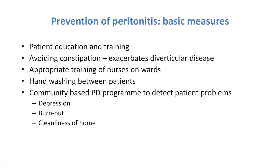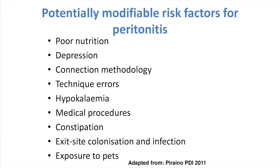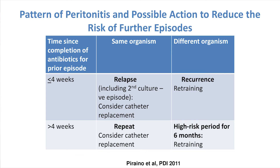Having a clean area at home — which can just be a tray — is important. You don't need a separate room, you don't need a separate table, but you do need a clean tray that you can do the exchanges on. These are the potentially modifiable risk factors, most of which we've mentioned. I do need to emphasize connection methodology — if you're going to start making your own fluid for economic reasons, it's not just the fluid, it's also the connections. Patients need retraining sometimes. When they've had an episode of peritonitis, always go over how they do their exchange. In the first month they're going to need much more monitoring.